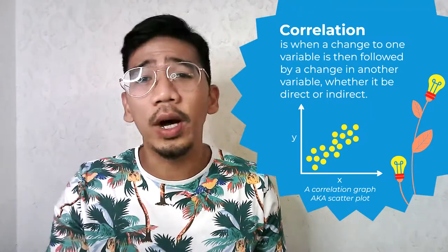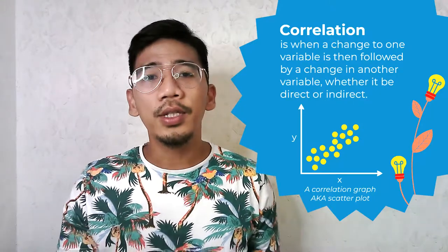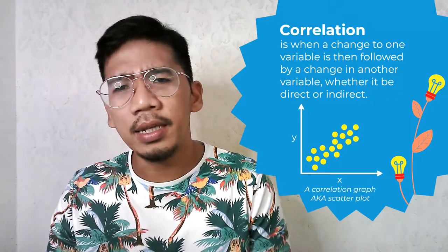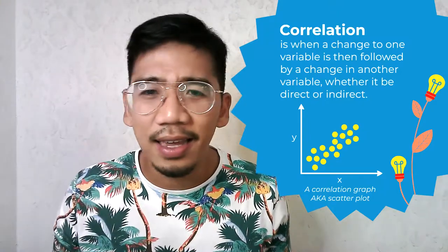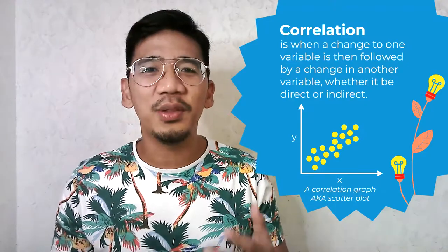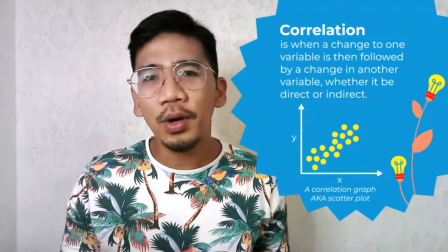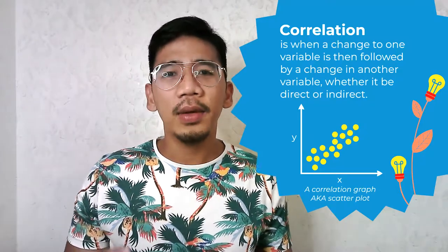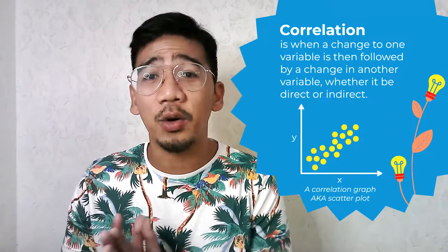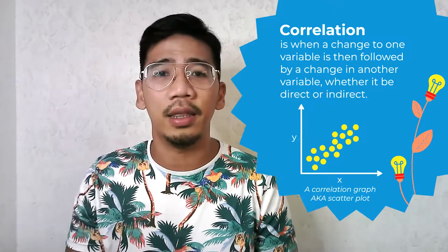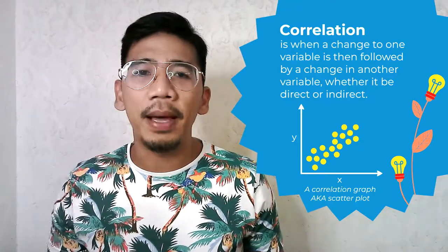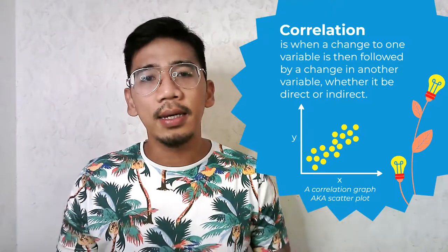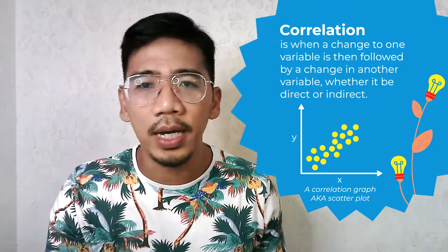A positive change is when two variables move in the same direction, meaning an increase in one variable results in an increase in another. So if an increase in X increases Y, it's positively correlated. An example of this would be foot size and height, because an increase in foot size is related to an increase in height — taller individuals tend to wear bigger shoes. If two variables move in opposite directions — when an increase in one results in a decrease in another — this is known as negative correlation. An example would be price and demand: an increase in price results in a decrease in demand.